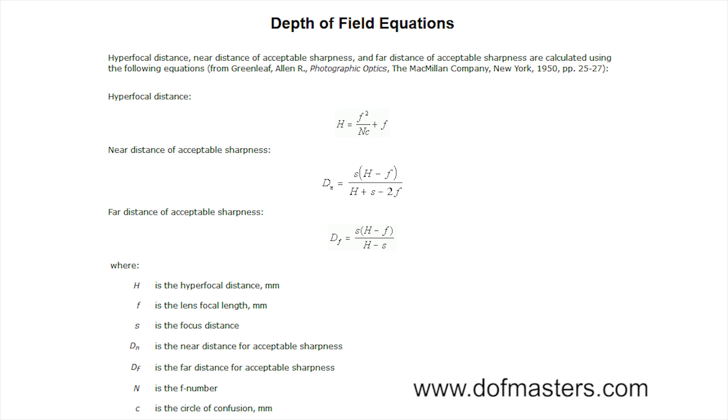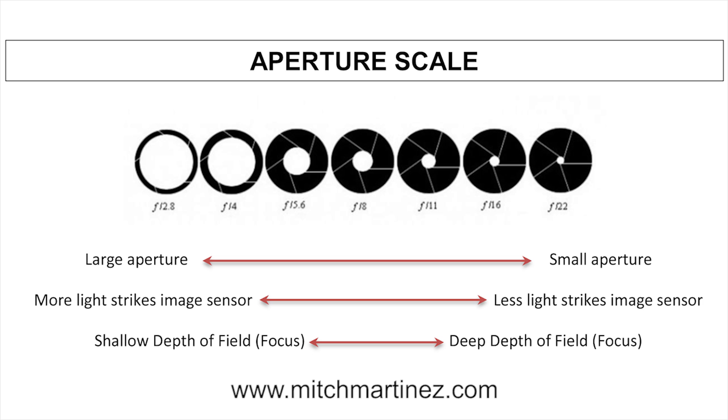Now to calculate hyperfocal distance, the equation is H equals F squared over NC plus F, where H is your hyperfocal distance in millimeters, F is the lens focal length in millimeters, N is the F stop or F number. The F number corresponds to how open or closed the lens iris or aperture is. Now this is often represented in stops or F stops such as F2.8, F5.6, F8, F11, and so on.